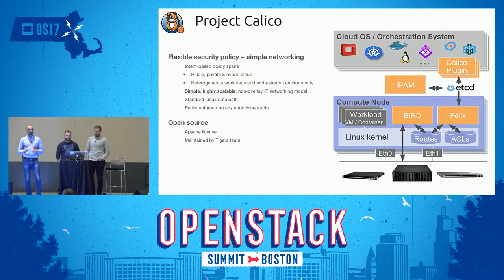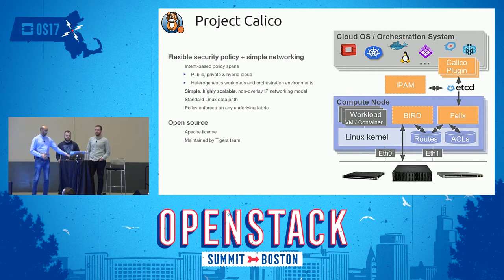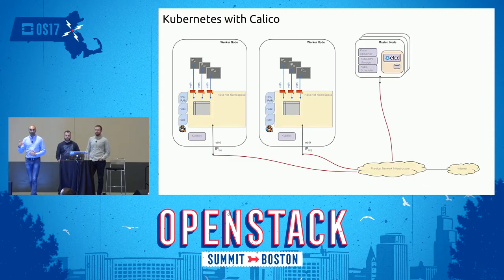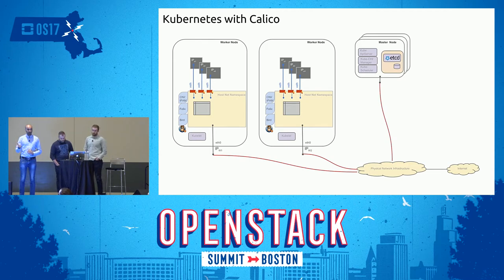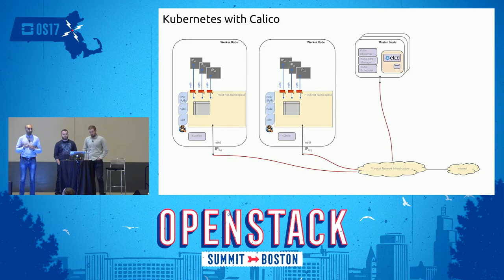It's super simple. No Open vSwitch, no bridges, no complex overlays. Every node is a router using the standard Linux routing table. Calico creates routes in the routing table pointing to local pods, and a BGP daemon called Bird creates BGP peering amongst Calico nodes to exchange routes. All nodes in the cluster know how to reach any given pod using its IP address — extremely simple.